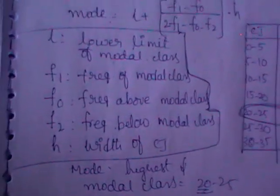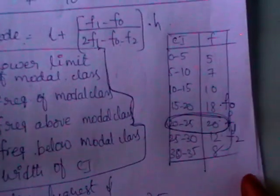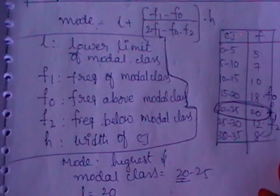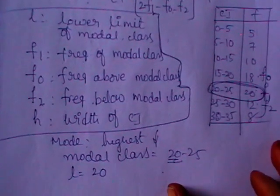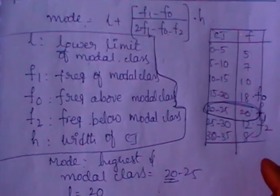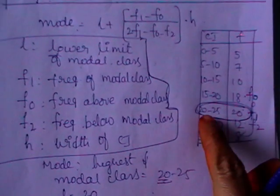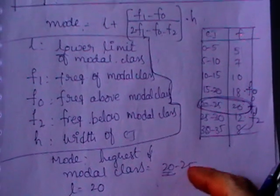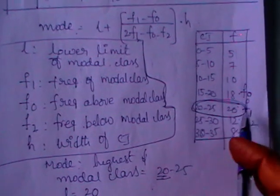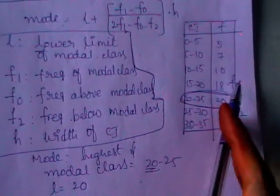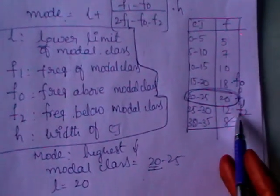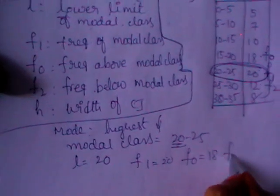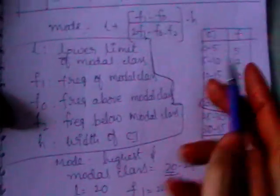There is no need to calculate the CF column for mode. You can consider the two given columns as they are — no need to calculate CF, X, mid-values, or anything. Identify the modal class by considering the highest frequency in the F column and round up that value. After identifying the modal class, identify L as the lower limit. The other term left is H, the width of the class interval, which is 5.